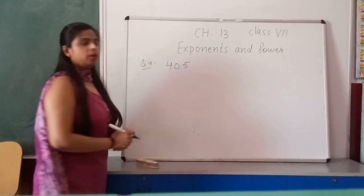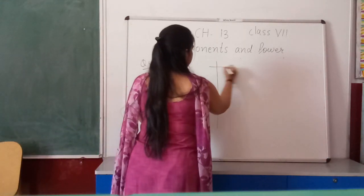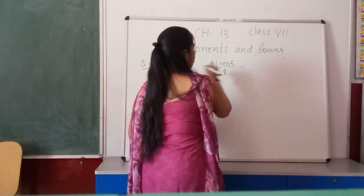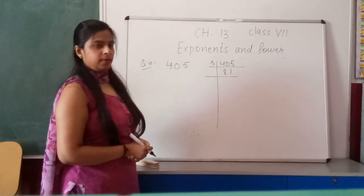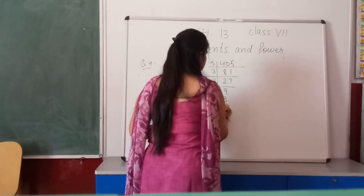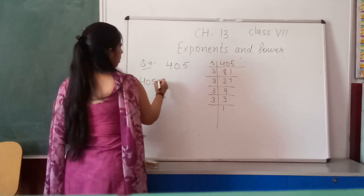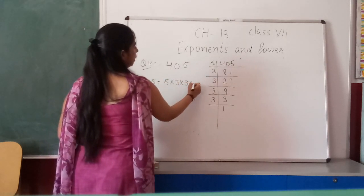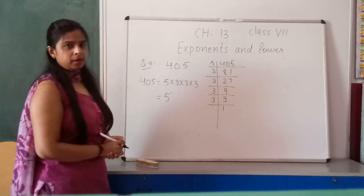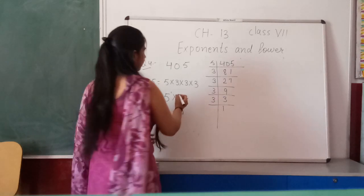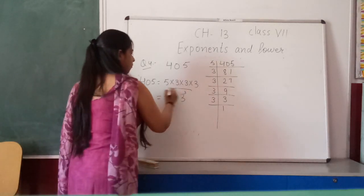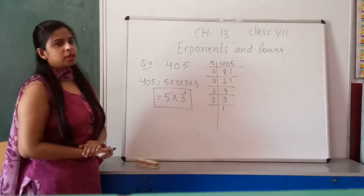Now for 405: applying the prime factorization method with divisibility test by 5 and then by 3. 405 = 5 × 3 × 3 × 3. So 5 is multiplied 1 time and 3 is multiplied 3 times. We can write 405 in exponential form as 5 raised to power 1 multiplied by 3 raised to power 3.